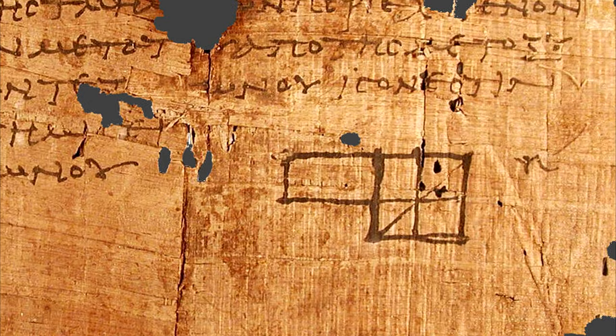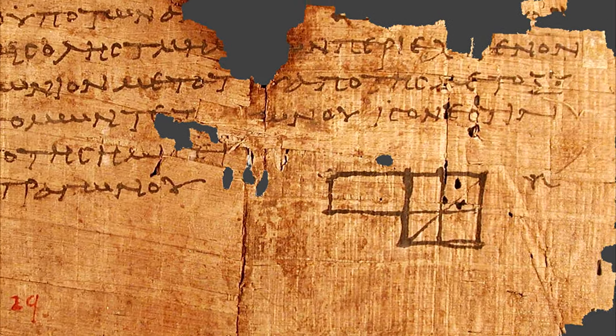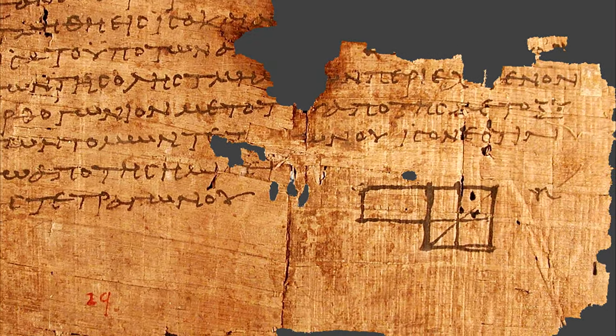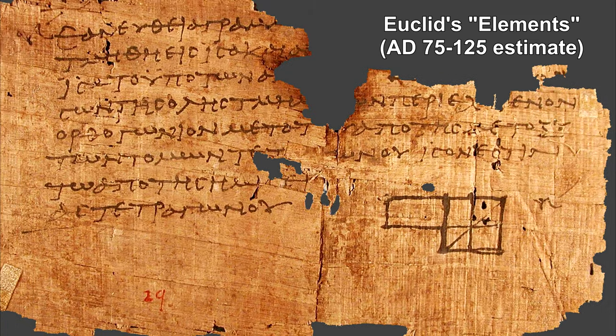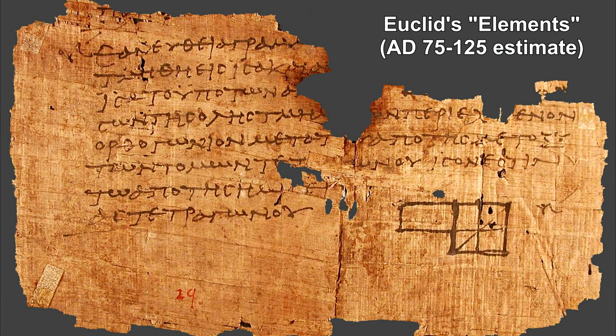Euclid lived in the Greek city of Alexandria in Egypt around 2,300 years ago. He spent his life studying and teaching geometry. He published his ideas in a book called Elements. To this day, it is the foundation for our understanding of geometry and mathematical processes in general.